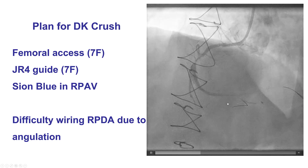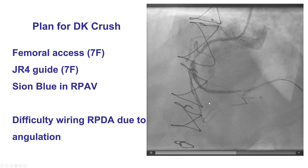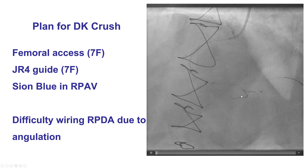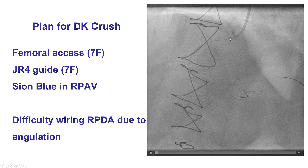Also, because it would be very hard to stent from the vein graft both retrograde and antegrade into the PDA, we decided to use the DK Crush technique — stent the native coronary and perform the DK Crush technique for the posterior lateral–PDA bifurcation.